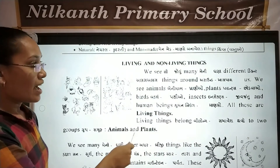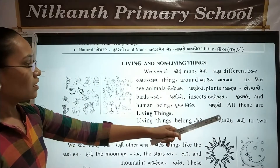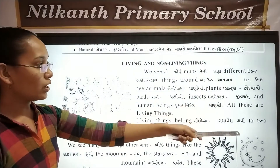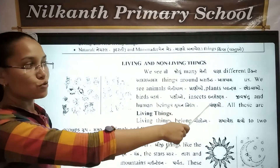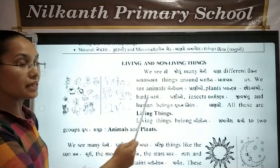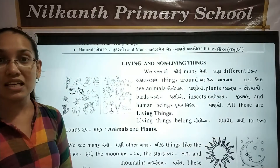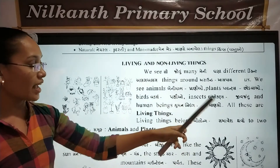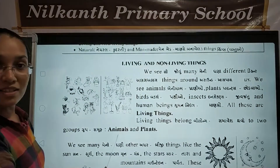We see animals, plants, birds, insects and human beings. All these are living things. Living things belong to two groups: animals and plants.